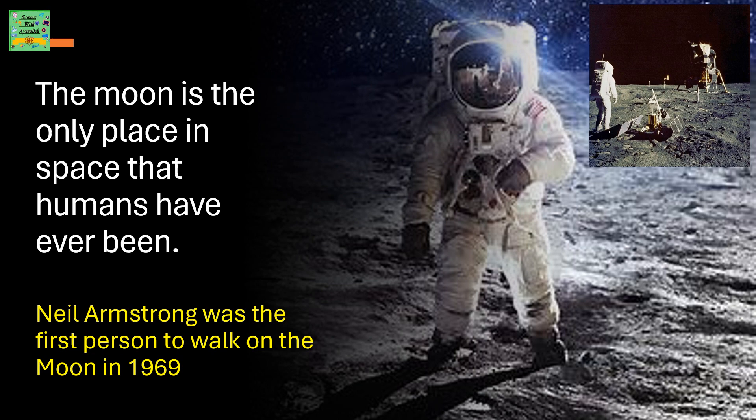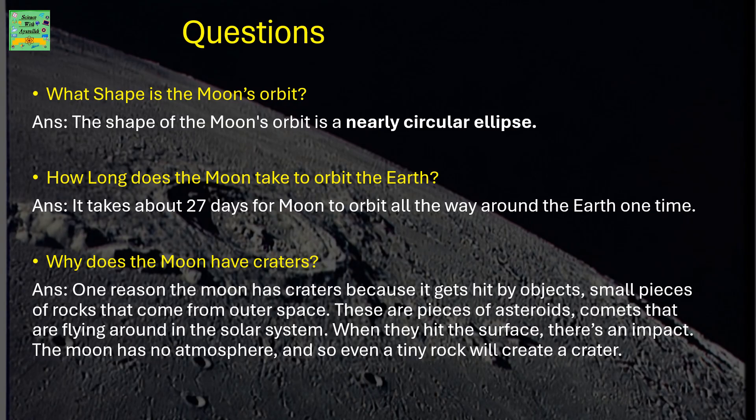Now here are a few questions. What shape is the moon's orbit? Answer: The shape of the moon's orbit is a nearly circular ellipse. How long does the moon take to orbit the Earth?